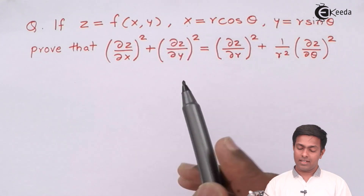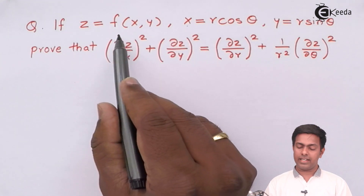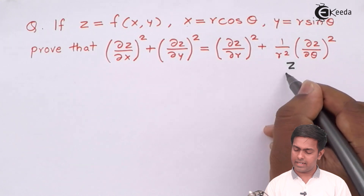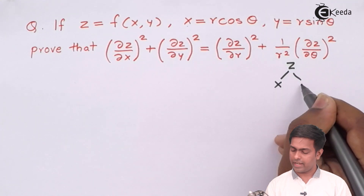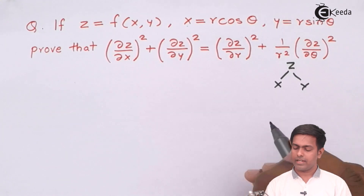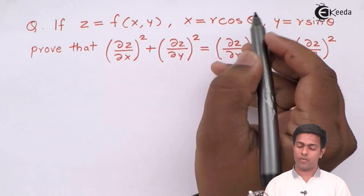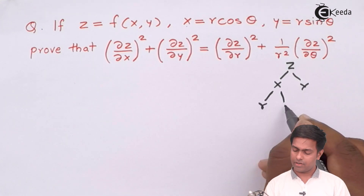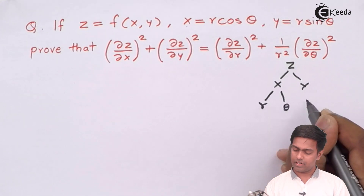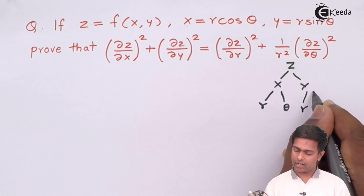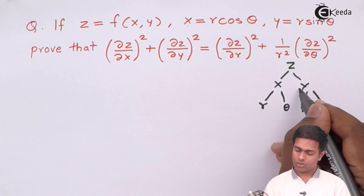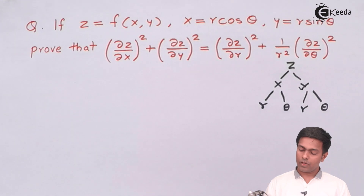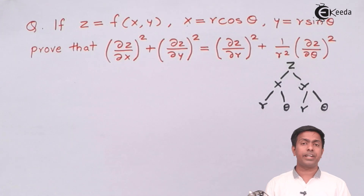Z is a function of X and Y. X is a function of R and theta — so here I'll write R and theta. Y is also a function of R and theta. So here we got the tree diagram.